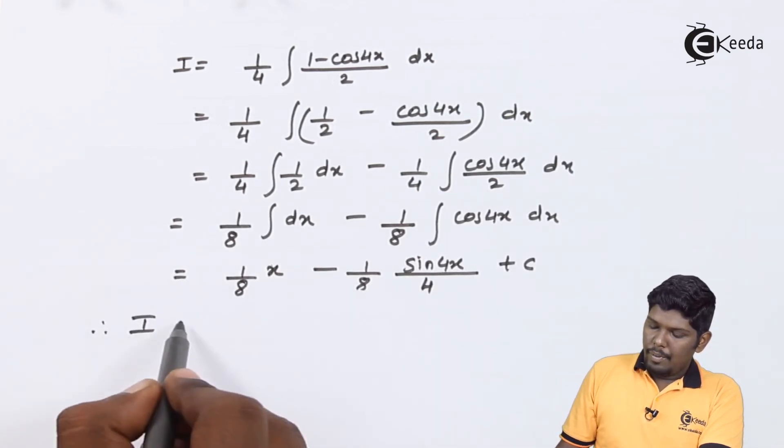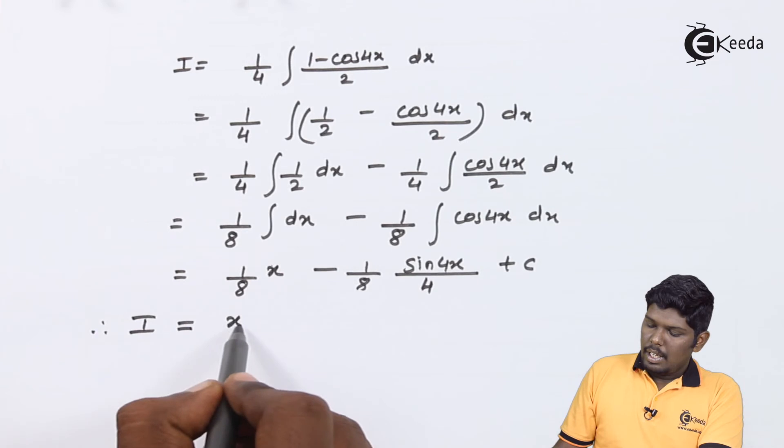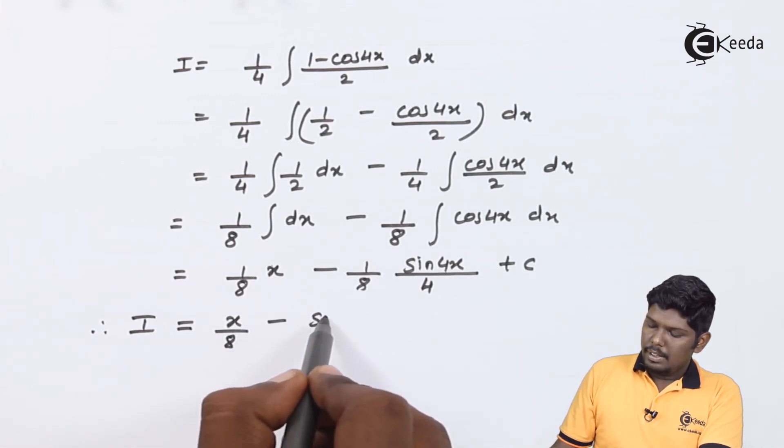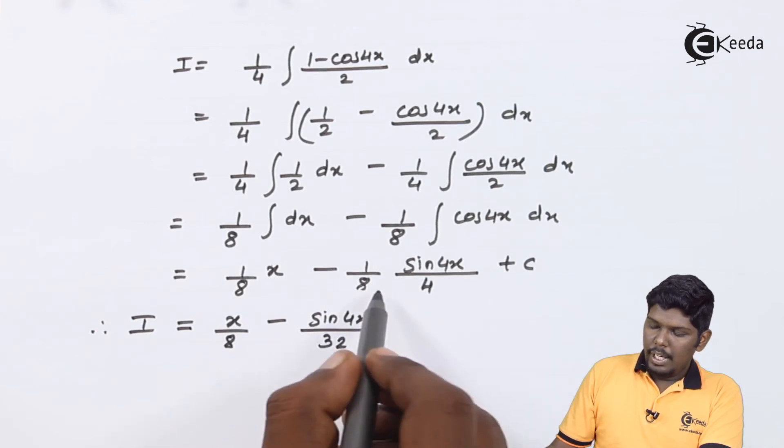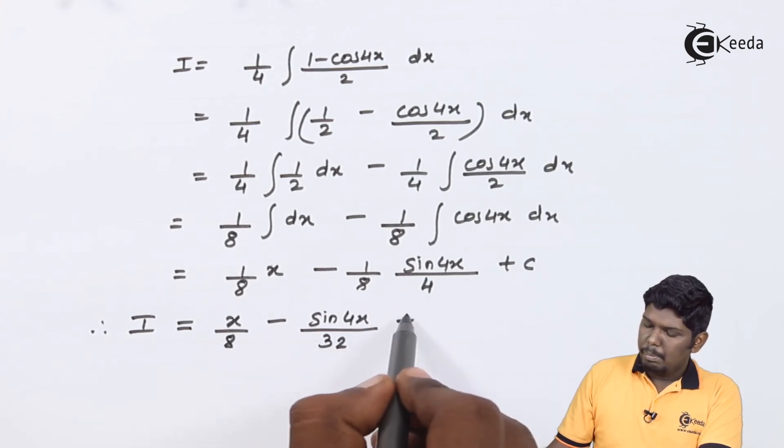Therefore, the final answer will be x/8 - sin 4x/32 plus c. This becomes the integration of the given problem.